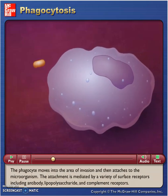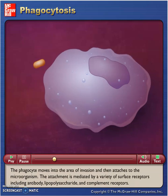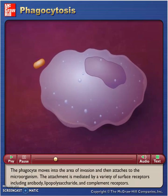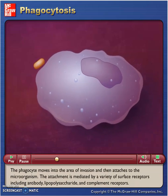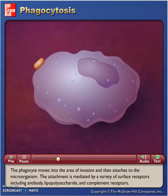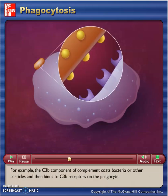The phagocyte moves into the area of invasion and then attaches to the microorganism. The attachment is mediated by a variety of surface receptors including antibody, lipopolysaccharide, and complement receptors.